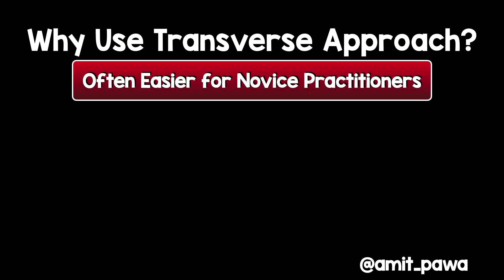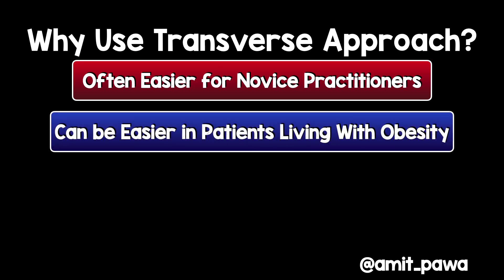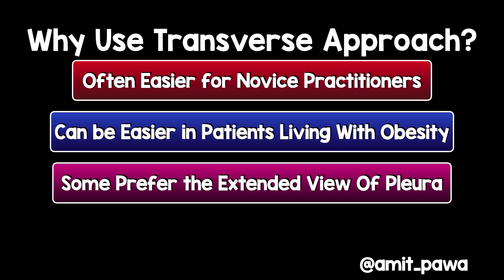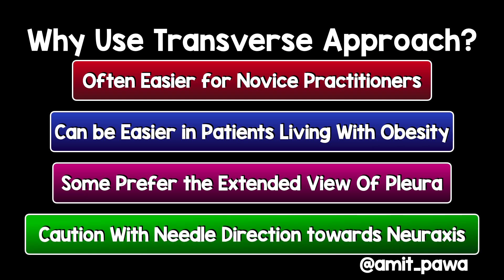So why use a transverse approach to the paravertebral space? I've found over the years of teaching it's often easier for novice practitioners, and also in patients living with obesity I find this technique easier. Some practitioners like the extended view of the pleura so as you're approaching the paravertebral space with the needle you know what to stay away from. A point of caution: we need to be careful when directing our needle toward the neural axis to make sure the needle doesn't dive underneath the shadow of the transverse process or inadvertently get too close to the midline.